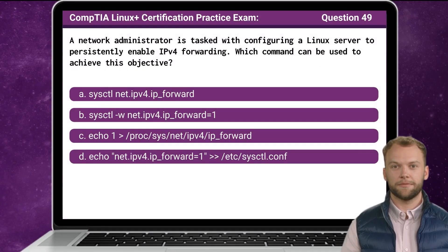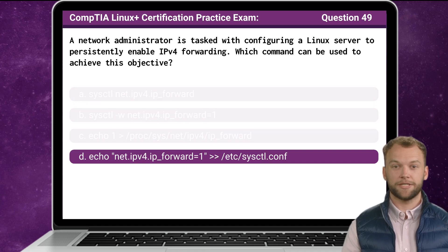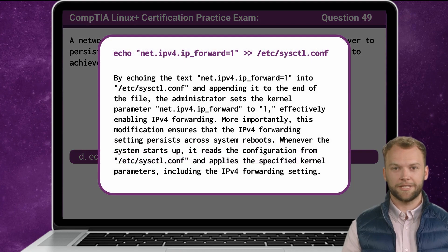Question 49. A network administrator is tasked with configuring a Linux server to persistently enable IPv4 forwarding. Which command can be used to achieve this objective? The answer is D. Now that we know the answer, let's break it down.